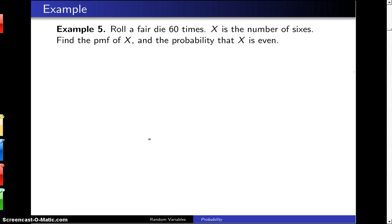Roll a fair die 60 times. Let the random variable X be the number of sixes. Find the probability mass function of X and the probability that X is even.